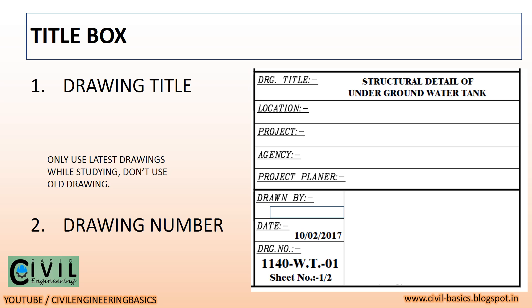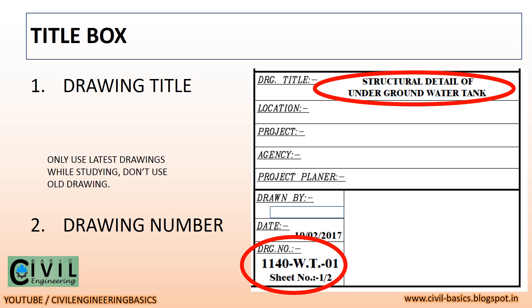In the title box, first of all see the drawing title. In this drawing you can see the drawing title is 'Structural Detail of Underground Water Tank,' which means this is the drawing of an underground water tank showing structural details. Now see the drawing number — here it is 1140 Water Tank 01. '01' means drawing number 1, and sheet number 1 out of 2, meaning there are a total of 2 drawings divided into 2 sheets. By viewing this detail you can confirm that this is the latest drawing. If the drawing has been revised by the structural engineer and you are using an old drawing, it will lead to bad practice, so always use the latest revised drawing.